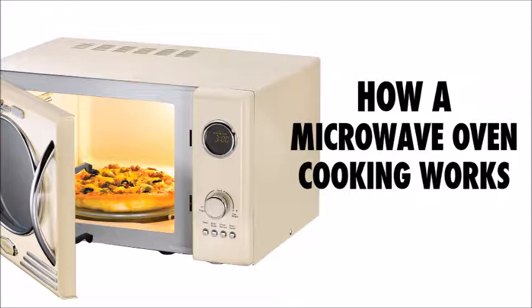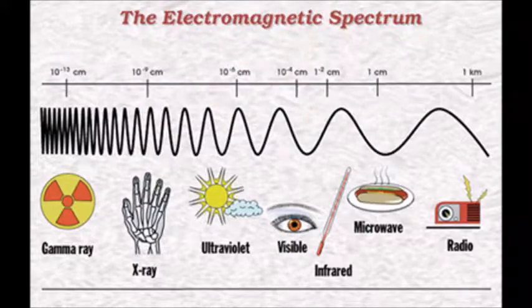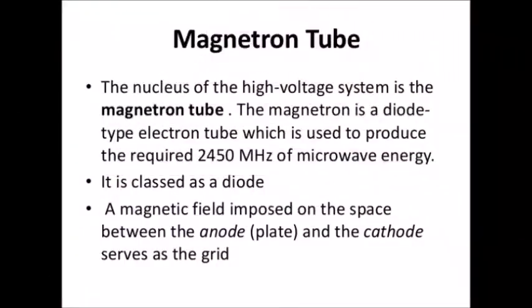As the name suggests, a microwave oven cooks food using microwaves. Microwaves are generated in the oven at a frequency of about 2450 MHz by means of magnetron.